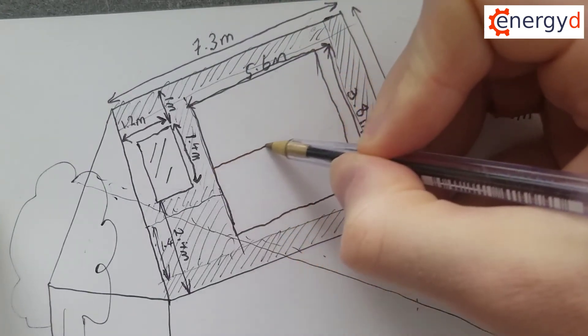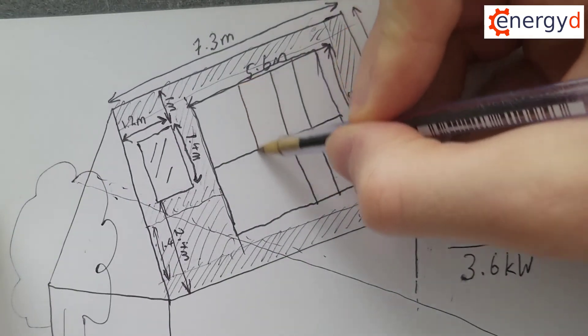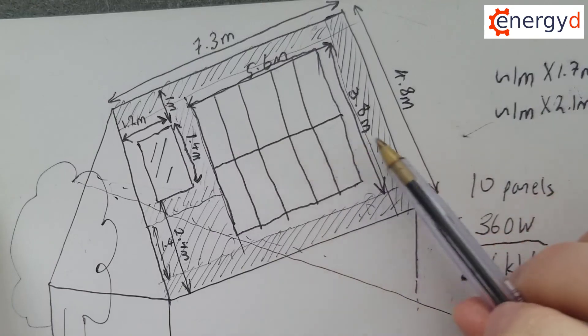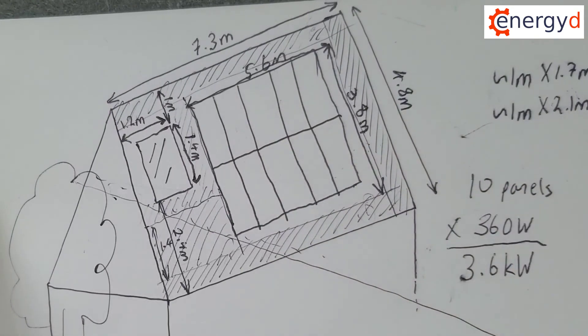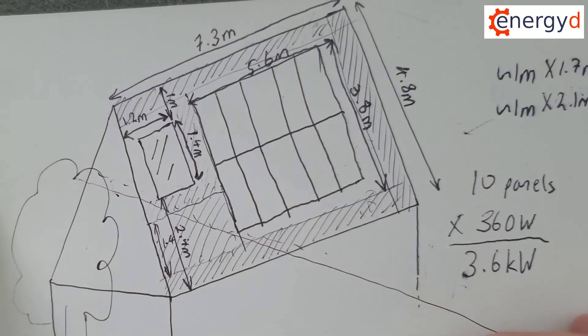So, this is our overall box for the 10 panels. We've got two high and one, two, three, four, five wide. And that's what the complete system would look like. 10 panels around 360 watts each, 3.6 kilowatts. Thanks very much for watching. See you soon.